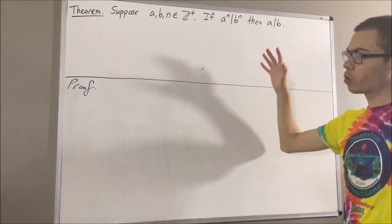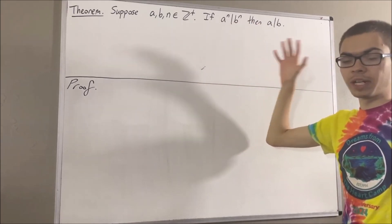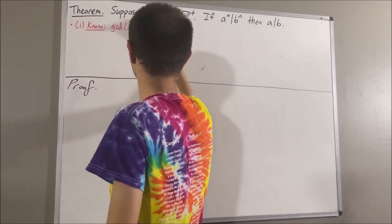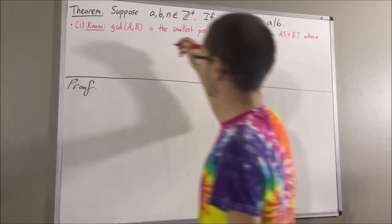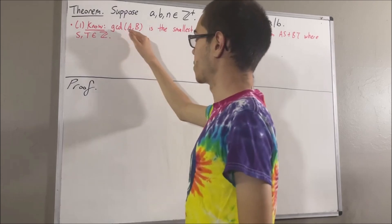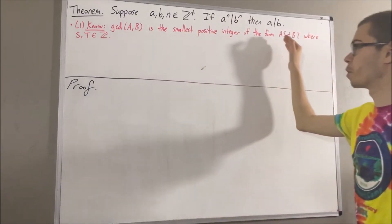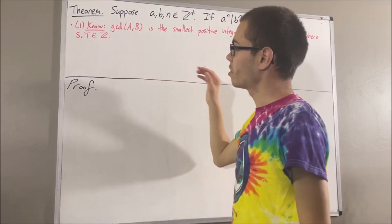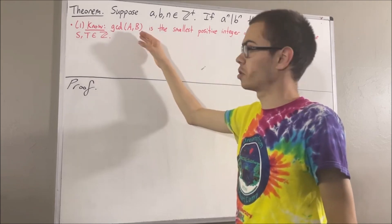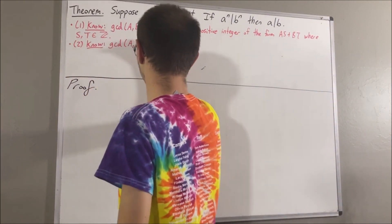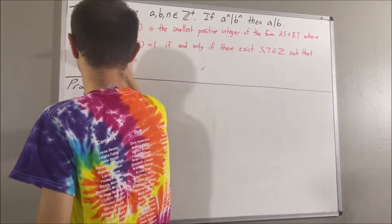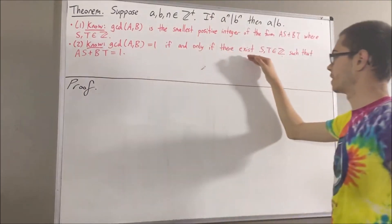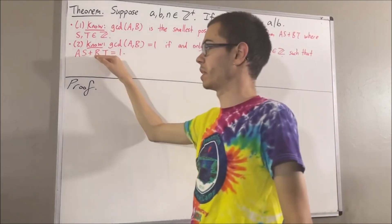Now, in proving this theorem, we are going to use some facts regarding the greatest common divisors of integers. Here's the first fact: the greatest common divisor of a and b is the smallest positive integer of the form as plus bt, where s and t are integers. And here's a fact regarding greatest common divisors which follows from this one: the greatest common divisor of a and b is equal to 1 if and only if there exist integers s and t such that as plus bt is equal to 1.